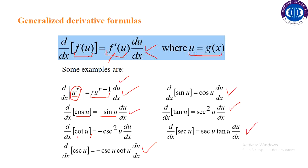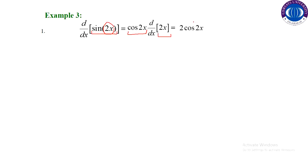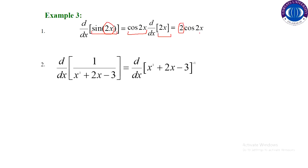In this example we have the trigonometric function sine 2x and we have to differentiate it. The outside function is sine and the inside function is 2x. The derivative of the outside function is cos 2x, and the derivative of the inside function is 2. So the result is 2 cos 2x.